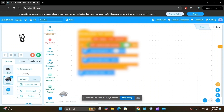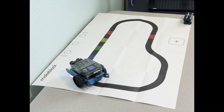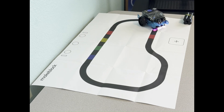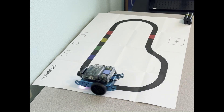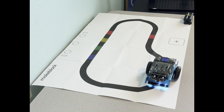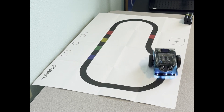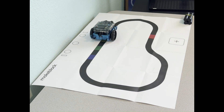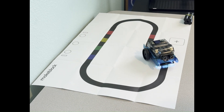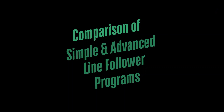Let's head over to the robot and see our program in action. Start the robot on the line and press button B to start the program. Watch how the robot makes smaller, more frequent corrections for smoother motion. The line following performance is a lot better than the jerky motion we got with the simple line follower program in our previous video.